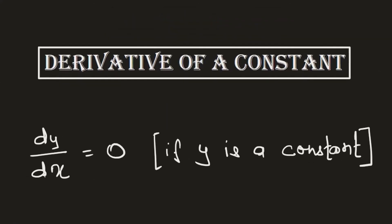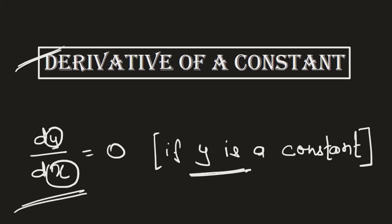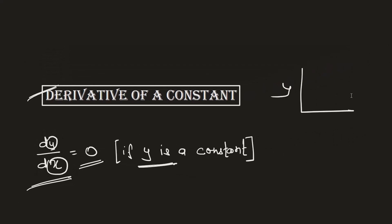Now let's discuss a few important rules in derivatives. First is the derivative of a constant: if y is a constant and you are finding how y changes with a small change in x, the derivative equals zero. This makes sense because if we plot y against x and y is absolutely constant — not changing over time — then the slope drawn will have a value of zero.